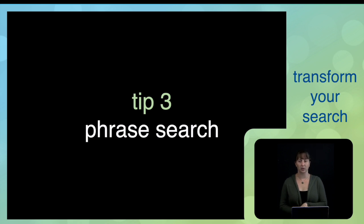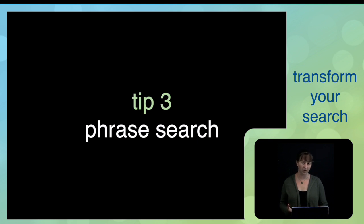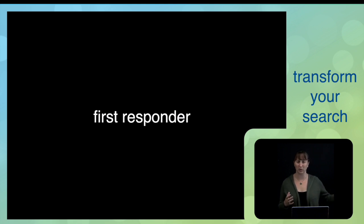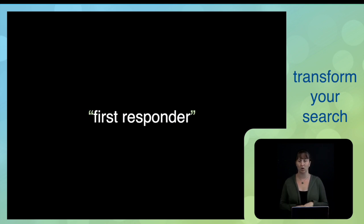Tip three: phrase search. Phrase searching allows you to narrow your results by forcing a greater specificity in how the database interprets the search terms you've included. If you're searching the words first responder, you want the database to search first responder, not first and then responder somewhere else in the document, which is what it will do by default unless you apply phrase searching — accomplished by adding quotation marks around the term you're searching. This makes a huge difference in the results you get, both in terms of relevance and quantity.